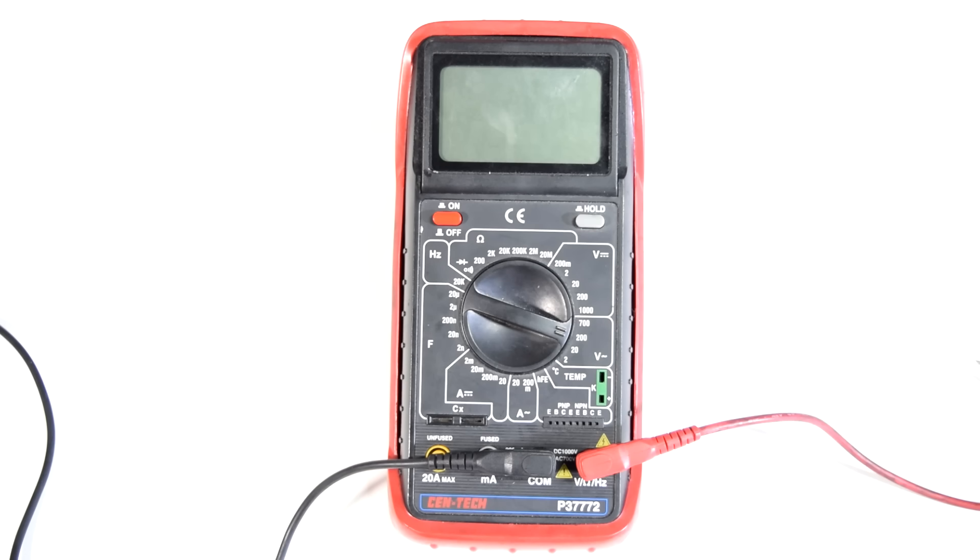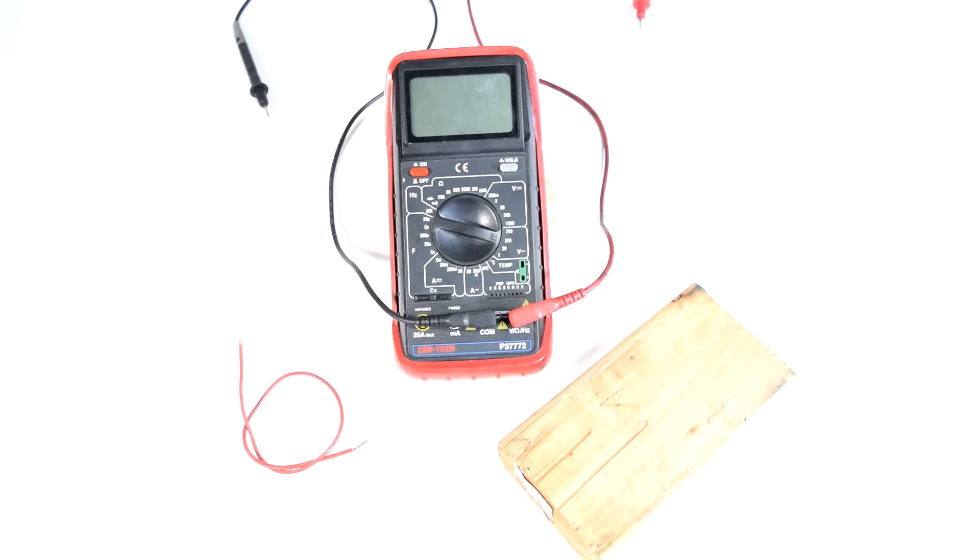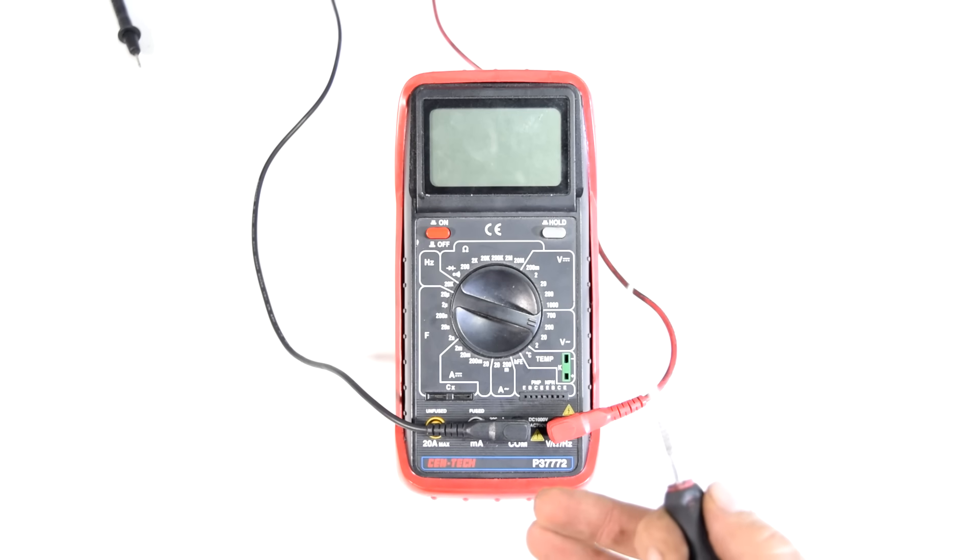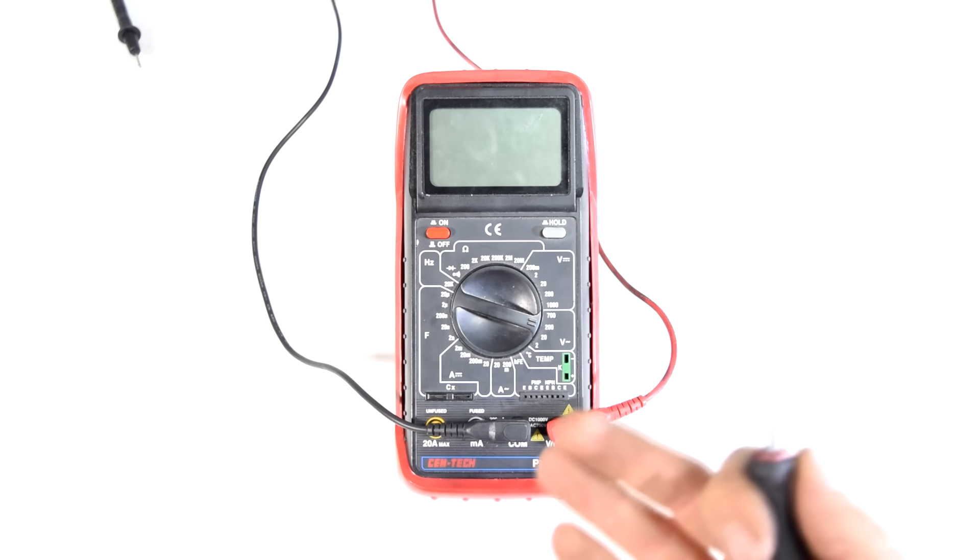All right next up measuring resistance. And resistance is basically the amount of opposition that any substance has to the flow of electric current. So for example this piece of wood is extremely resistant to the flow of current whereas this wire has next to no resistance to the flow of electric current. Now different components of an electric circuit are supposed to have a certain amount of resistance so that the whole system works properly and that's where knowing how to exactly measure resistance is very crucial.